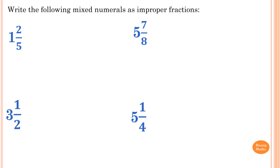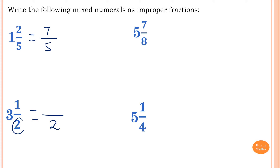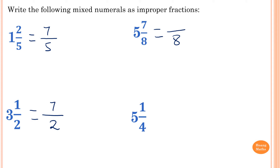Please stop the video and try this one yourself. 1 and 2 fifths — write the 5 first, then 1 times 5 is 5, plus 2 is 7. So 7 over 5. Next, 3 and 1 half — the denominator is 2, so 2 times 3 is 6, add 1 gives 7. So 7 over 2. Then 5 and 7 eighths — 8 times 5 is 40, plus 7 is 47, so 47 over 8. And 5 and a quarter — 4 times 5 is 20, plus 1 is 21. So 21 over 4.